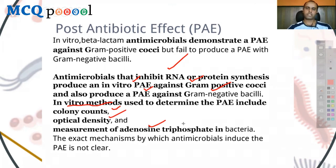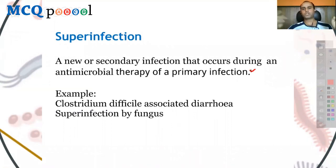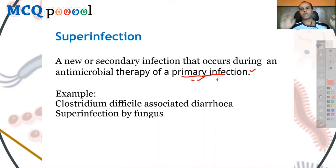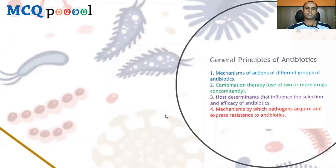Superinfection is a new or secondary infection that occurs during antimicrobial therapy of a primary infection. When a broad-spectrum agent — often used in empiric therapy — kills not only the infecting bacteria but also the body's natural flora, that ecological space becomes available for pathogenic bacteria to invade. Clostridium difficile-associated diarrhea is a classic example of superinfection, as is superinfection by fungi.